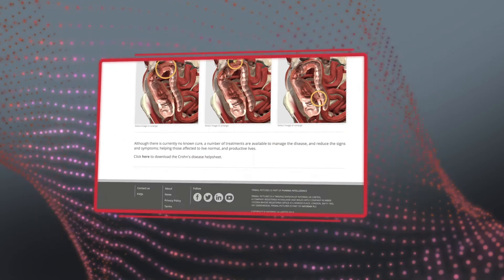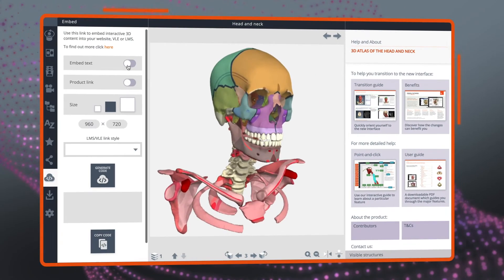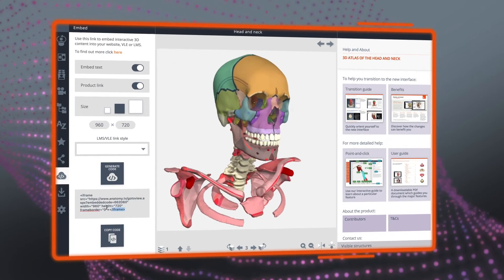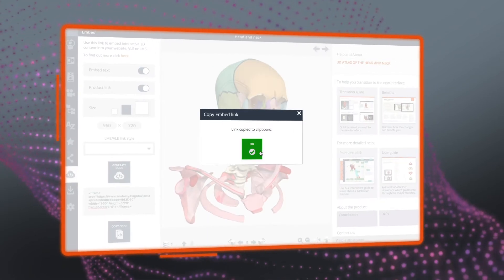Using the embeddable viewer is simple. Click on the embed button to create a code snippet that can be inserted into your institution's web page or VLE.